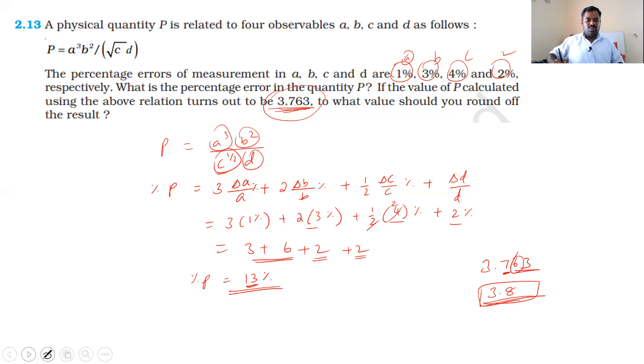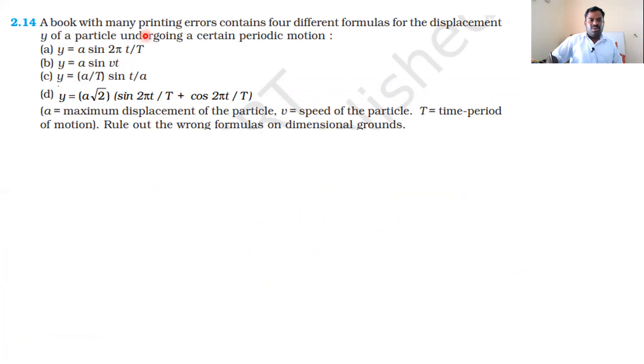Next solution, 2.14: A book with many printing errors contains four different formulas for the displacement y of a particle undergoing a certain periodic motion. Now we have trigonometric functions. Trigonometric functions have no dimension. Whatever is inside a trigonometric ratio must be dimensionless. For the first question, y equals a sin 2πt/T. A has dimension of length, and 2πt/T is dimensionless. That's why this is correct.